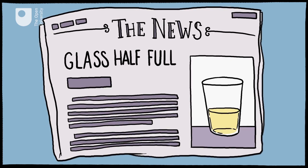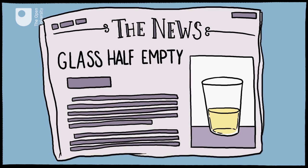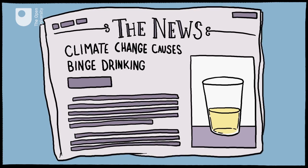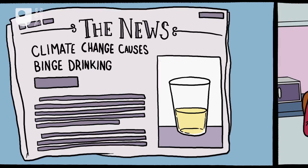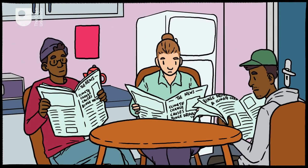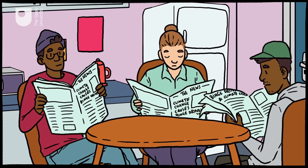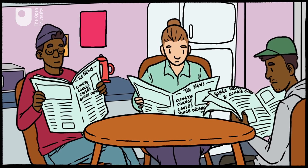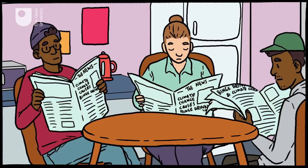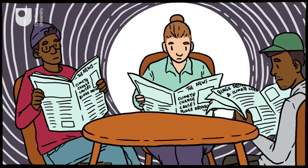Language is central to the way we understand the world — it mediates everything from the way we see world events to how we understand the big issues of the day. But it's not only newspapers and television programs that shape our understanding of society. Our friends also play a part. We tend to be friends with people who have the same views as us, and this creates an echo chamber effect where we mainly just get to hear opinions that we already agree with.